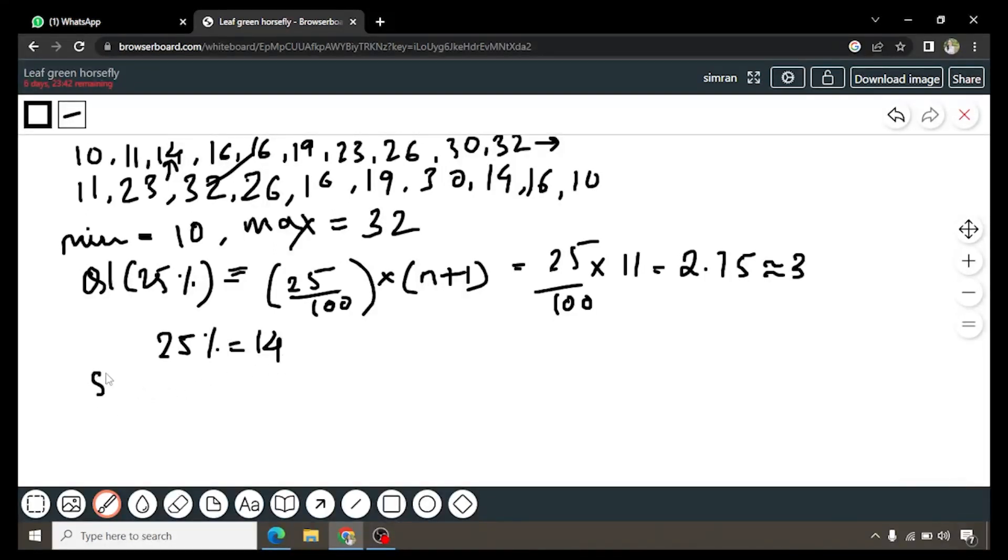Similarly, the 50th percentile mark or the median, you will get it by calculating the middlemost value over here. So it will be 16 plus 19 upon 2, which will give us 17.5. So 17.5 is the median of this entire data. How do we get 16 plus 19?